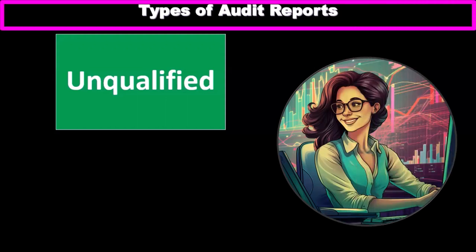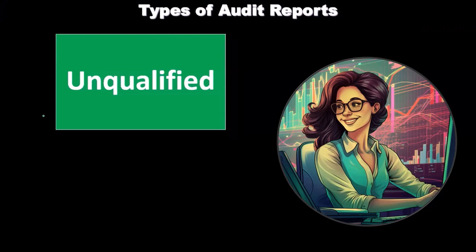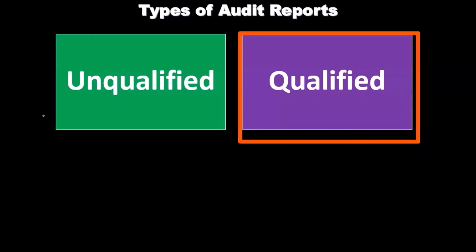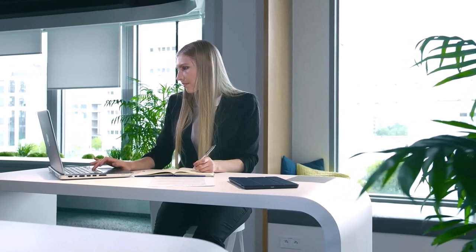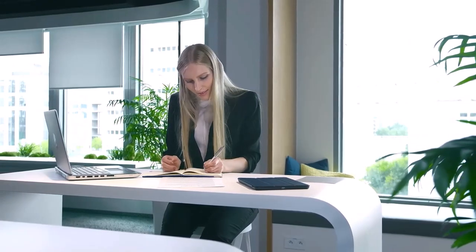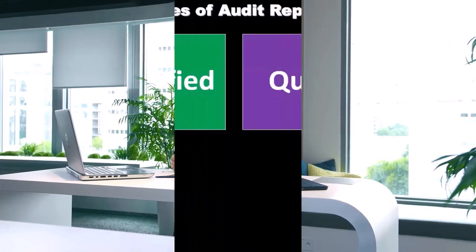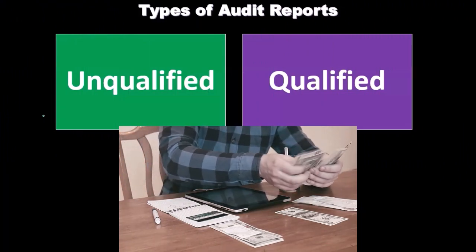What types of reports can we issue? We have the standard unqualified report — the highest standard. If there aren't any problems, we issue the unqualified. Then we can go to a qualified report, which is a step down. When thinking of the hierarchy of reports, note that 'unqualified' means it doesn't have any qualifications to the opinion that the financial statements are in accordance with generally accepted accounting principles. There are no qualifications — this is the highest report.